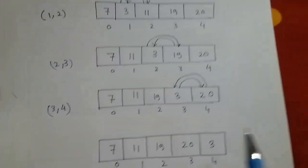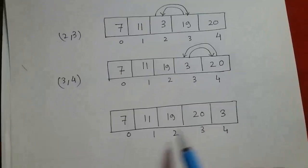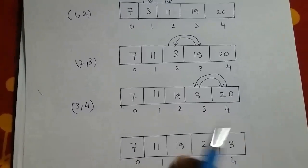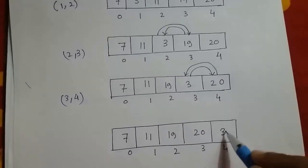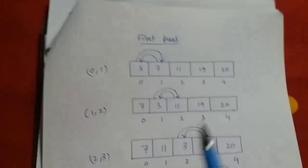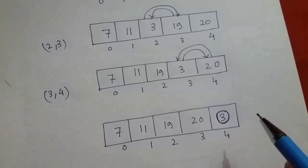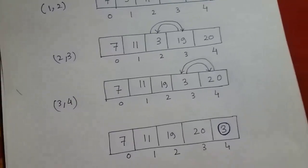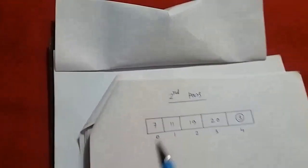This is the end of the first pass because there are no other comparisons left. The array is not fully sorted yet, but one noticeable thing is that we have got the smallest element fixed at the last position. After the end of the first pass we have identified the smallest element. Now let us move to the second pass. After the end of the first pass the array is: 7, 11, 19, 20, and 3 — and 3 is fixed.